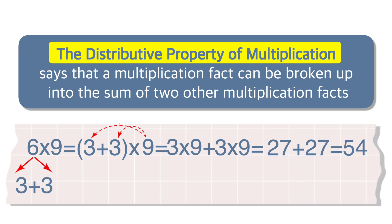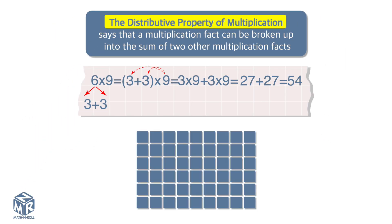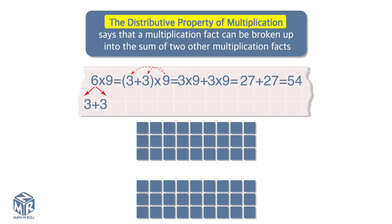Let's make an array. The 6 represents the rows, and the 9 represents the columns. Because we broke apart the 6, we can break up the array into two smaller arrays with 3 rows each. We get two identical arrays. Each array has 3 rows and 9 columns.